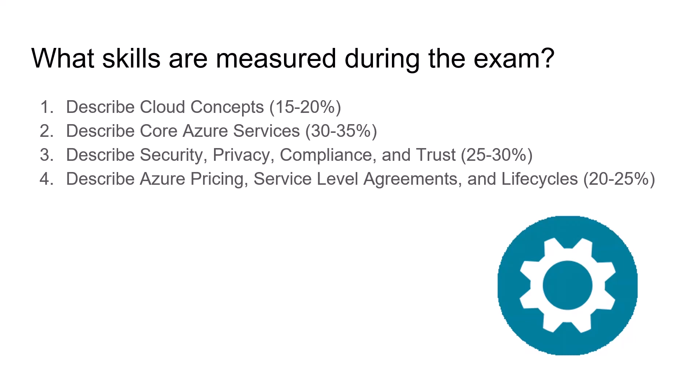The third domain is describing security, privacy, compliance, and trust, which carries 20 to 30 percent of the overall exam — the second highest priority. The fourth one is describing Azure pricing, service level agreements, and lifecycles, which carries 20 to 25 percent of the overall questions in the exam.